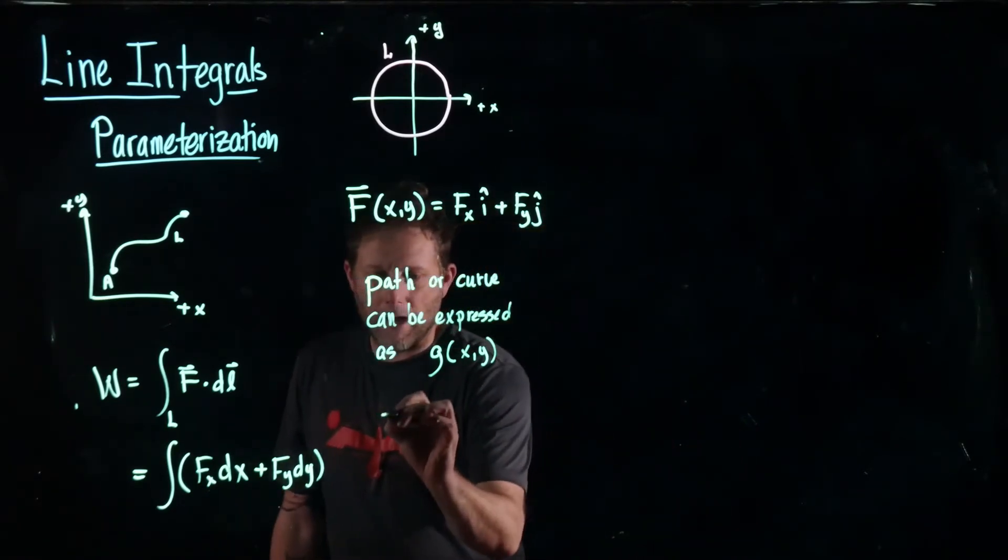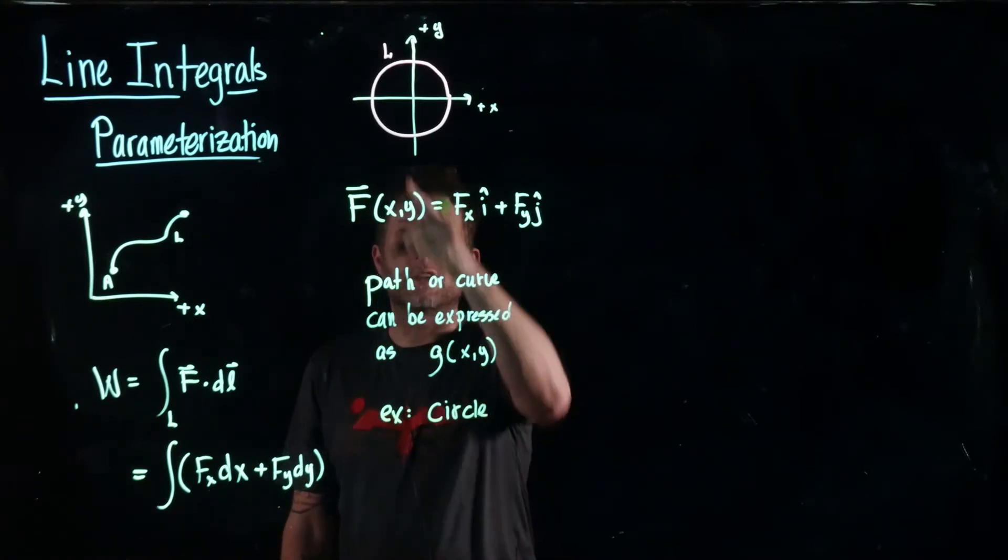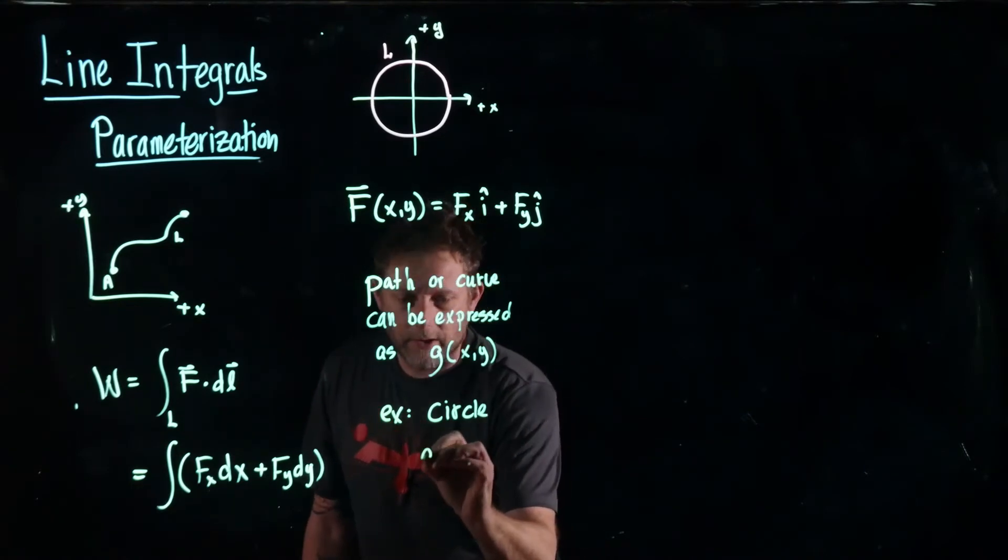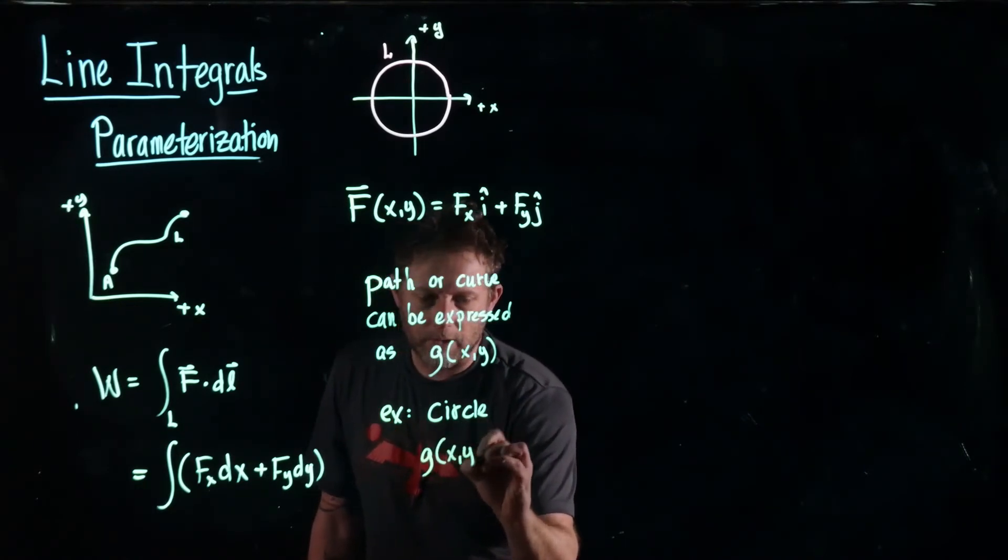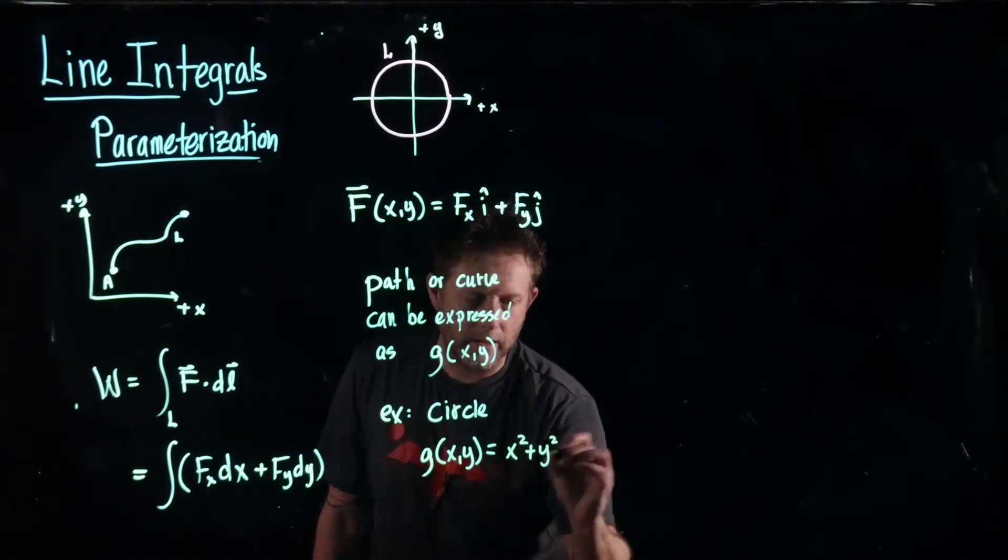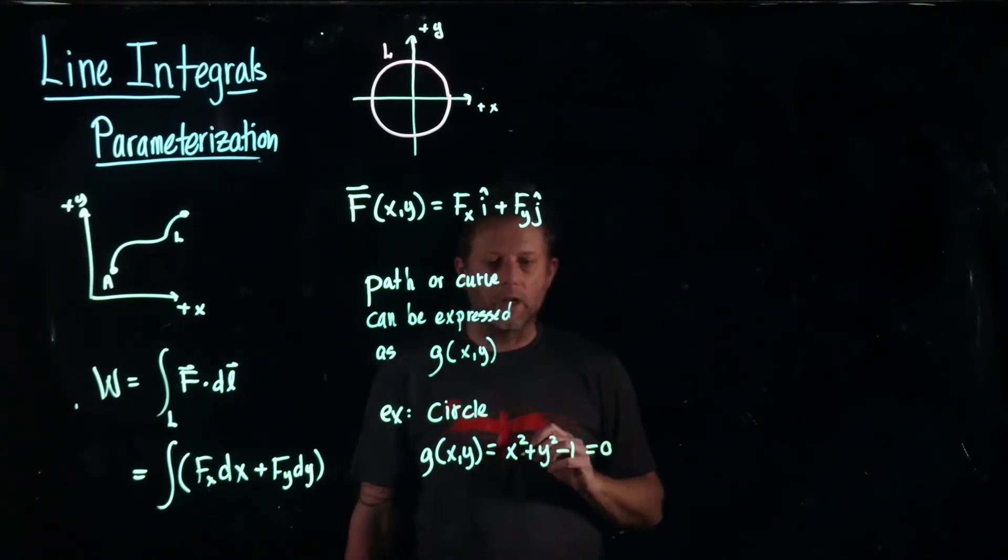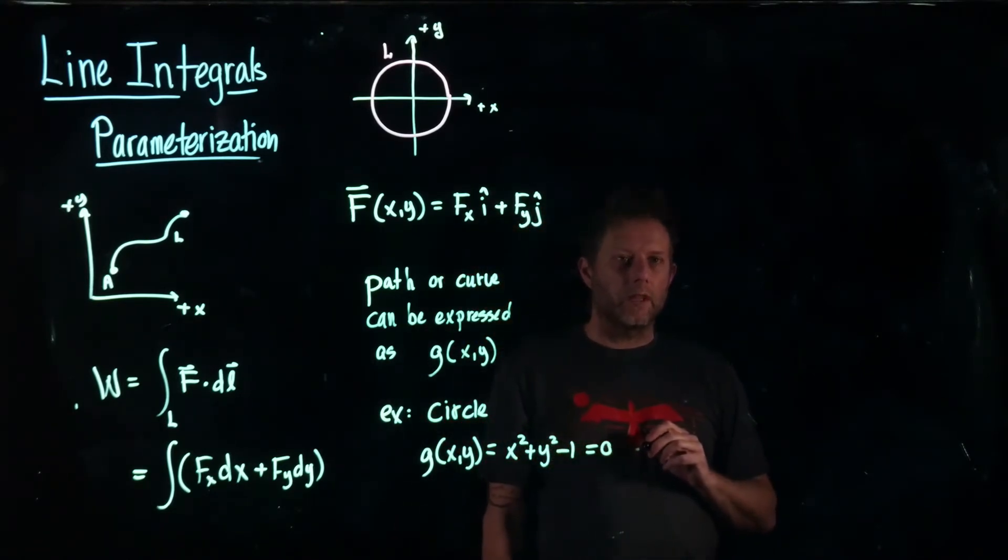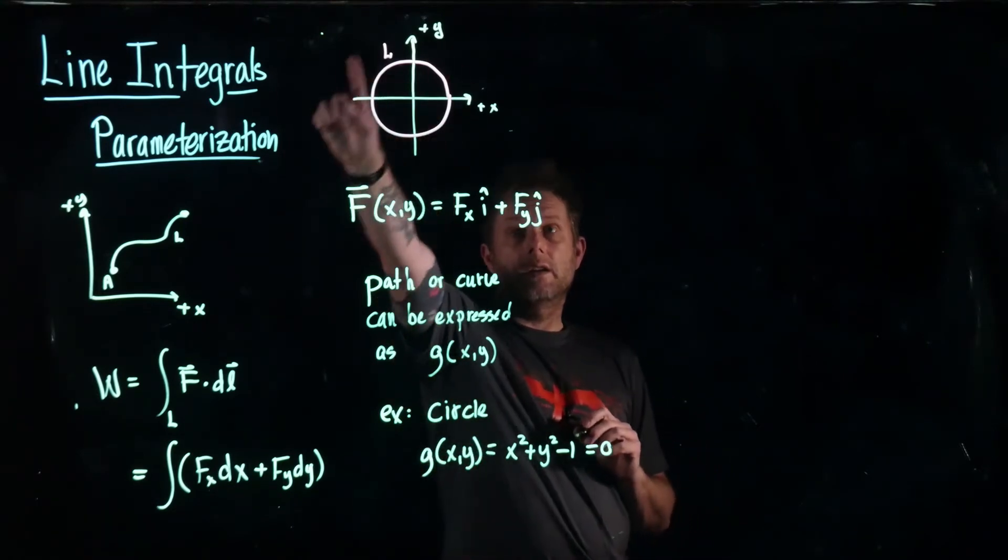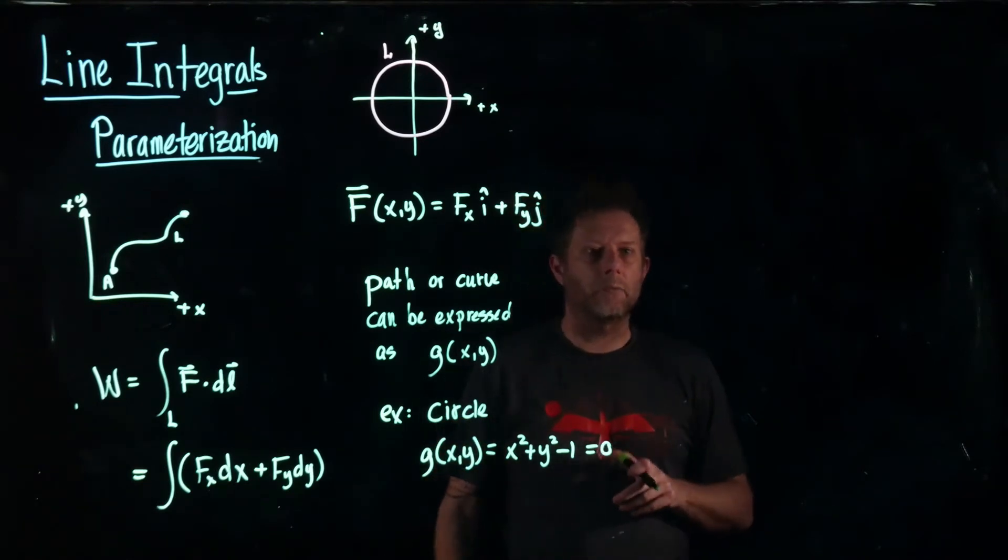So the example we have with a circle. So the circle, say it is a unit circle so the radius is one. Then that function is one you're familiar with. It's going to be x squared plus y squared minus one is equal to zero. That's our function. So now we have written that curve or that line as a function of x and y.